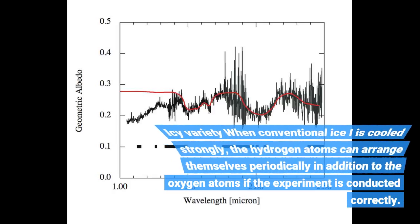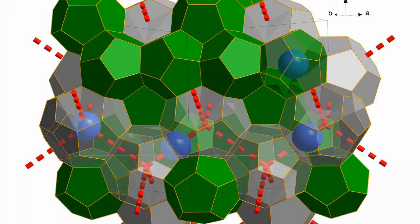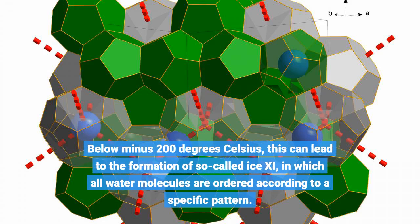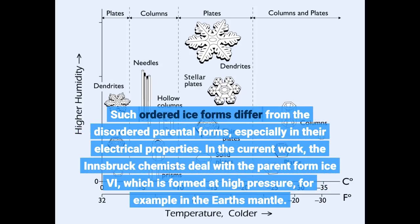When conventional ice is cooled strongly, the hydrogen atoms can arrange themselves periodically in addition to the oxygen atoms if the experiment is conducted correctly. Below minus 200 degrees Celsius, this can lead to the formation of so-called ice 11, in which all water molecules are ordered according to a specific pattern. Such ordered ice forms differ from the disordered parental forms, especially in their electrical properties.